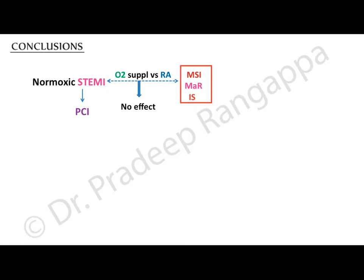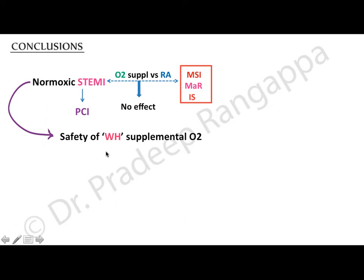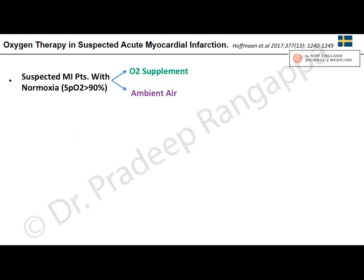Another Swedish study by Hofmann et al. in 2017 — oxygen therapy in suspected acute myocardial infarction — included patients with suspected MI and normoxemia, saturation more than 90 percent. They were randomized to oxygen supplementation at 6 liters per minute via face mask for 6 to 12 hours, or ambient air. This was a multicentric open-label registry-based randomized controlled trial using data from the SWEDHEART database, covering 35 hospitals in Sweden between 2013 and 2015.